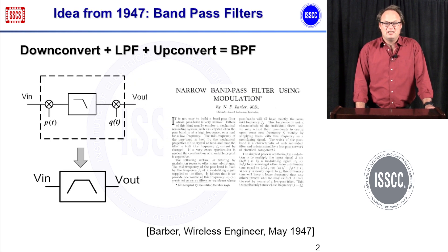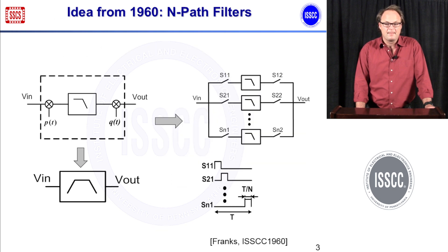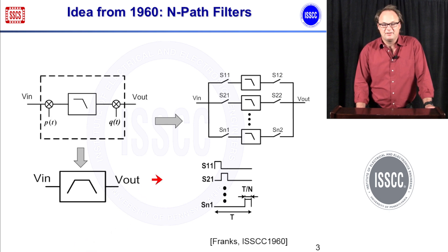N-Path filters is based on a very old idea. It comes from 1947, where bandpass filters were proposed by using a down converter, a low pass filter, and an up converter. This way you basically receive one little channel and transmit it again, and this behaves like a narrow band bandpass filter, published already in 1947. Later in the 1960s, N-Path filters became popular, which is in fact a sliced version of this down converter, filter, and up converter.